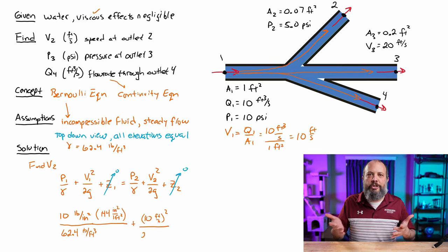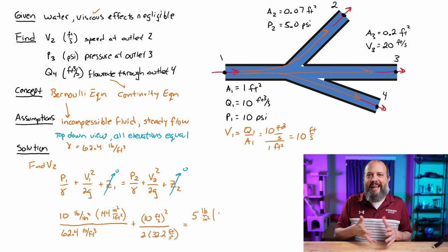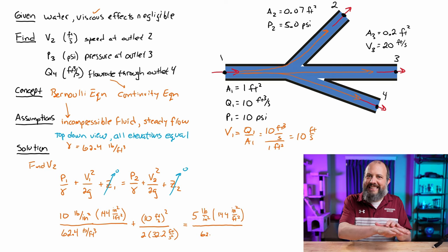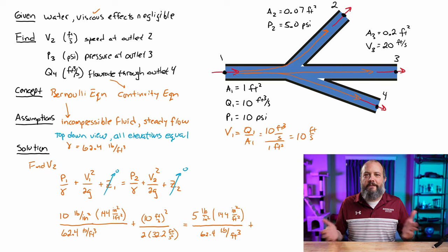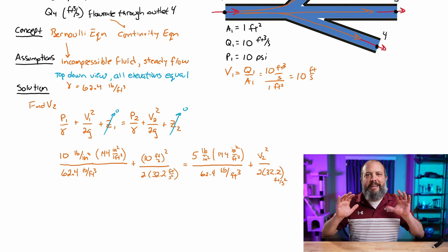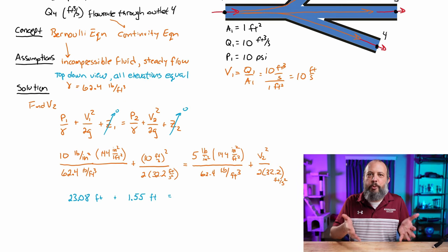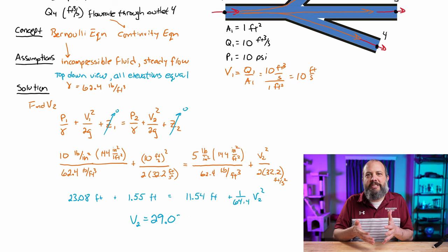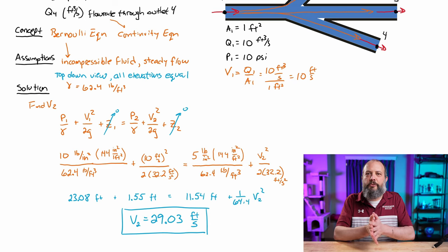Divide by 2G, where G is 32.2 feet per second squared, not 9.81, which is used for metric units only. We can plug in pressure on the right-hand side and again have to convert from PSI to pounds per square foot. V2 is the only unknown. We get 29.03 feet per second as the velocity through point 2.